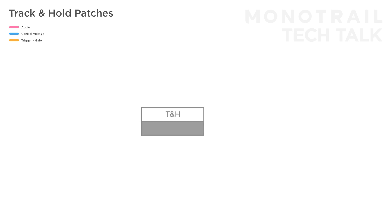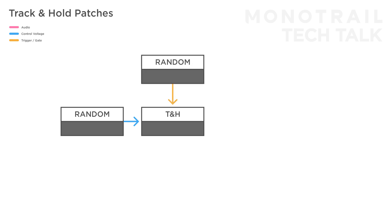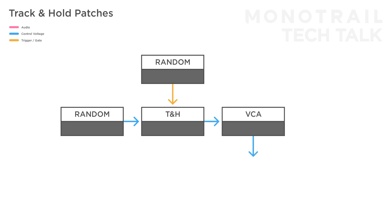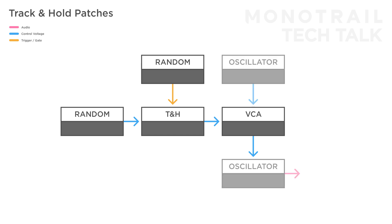In larger drone or ambient patches, a track and hold with random voltages at both the track input and gate input — to create random freeze moments — can be great. You can use the output on directly audible elements like filters, wave folders, wave shape oscillators and so on. But within a modular you can also use this voltage to control things like clock speed, delay time, and reverb amount on effects modules. A great way to bring dynamics over a longer period of time is to use this voltage on a VCA to control the amount of modulation going from one place to another — for example, the amount of frequency modulation from one oscillator to another, or the amount an LFO is modulating a filter.